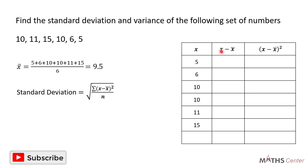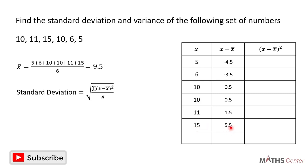We can now find x minus the mean. The mean is 9.5, so we subtract 9.5 from each value. The first one: 5 minus 9.5 is negative 4.5. Next: 6 minus 9.5 is negative 3.5. Then 10 minus 9.5 is 0.5. Another 10 minus 9.5 is 0.5. Then 11 minus 9.5 is 1.5, and 15 minus 9.5 is 5.5.